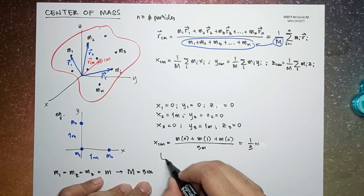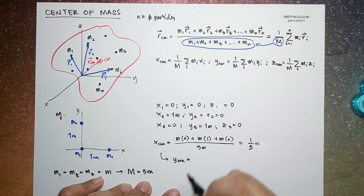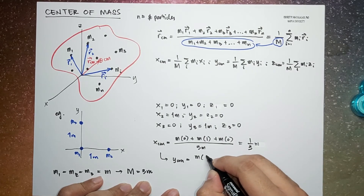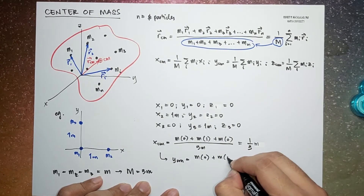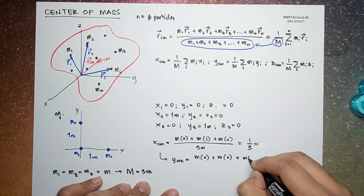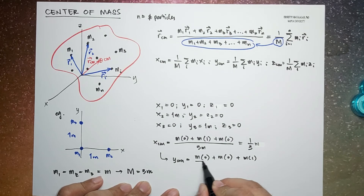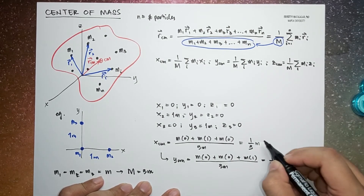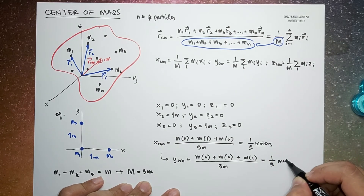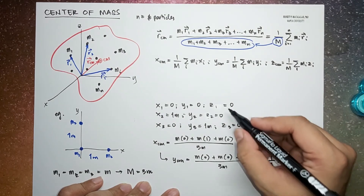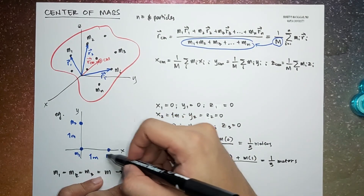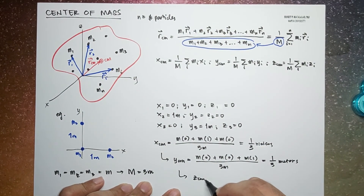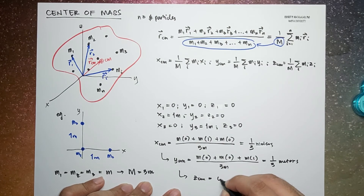Similarly, the y-component of the center of mass is: y_cm = [m·(0) + m·(0) + m·(1)] / 3m = 1/3 meter. Since the system lies entirely in the x-y plane, the z-component of the center of mass is 0.